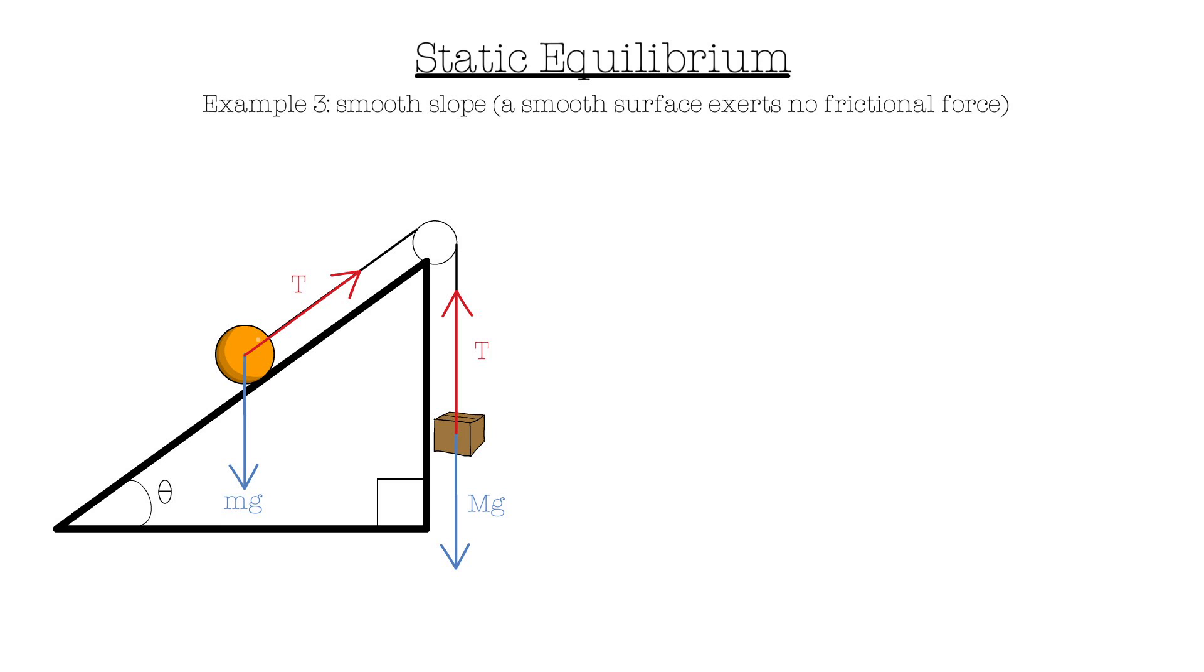As the ball is touching the slope, there will also be normal contact force perpendicular to the slope. How do we find the relationship between m and capital M?